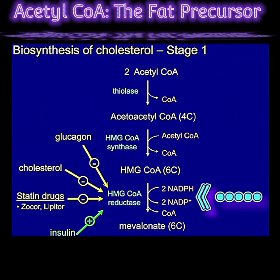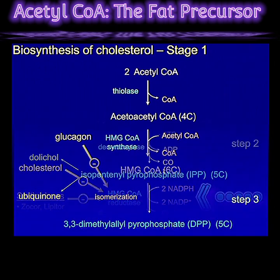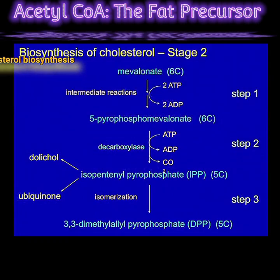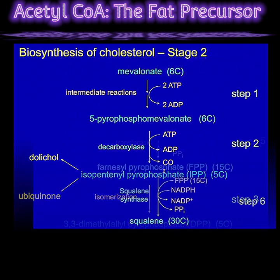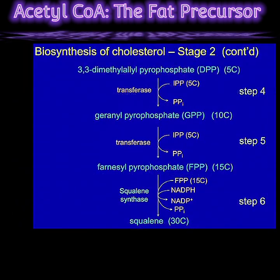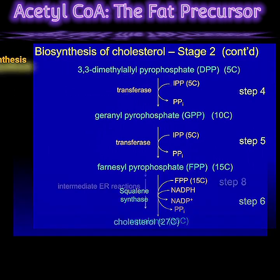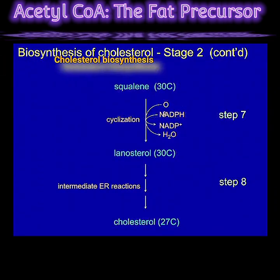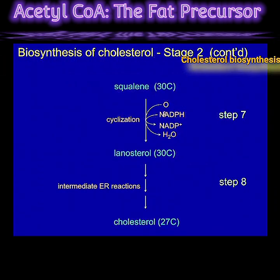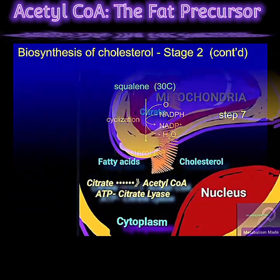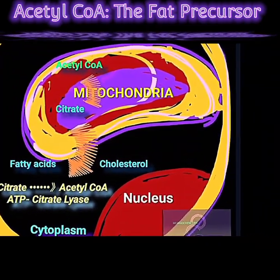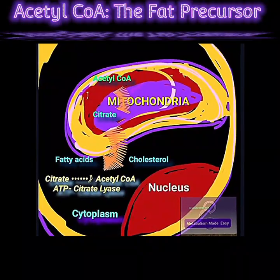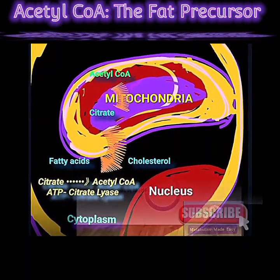HMG-CoA reductase is tightly regulated by hormones and intracellular levels of cholesterol. Isopentenyl pyrophosphate, formed from mevalonic acid, is sequentially added until squalene is formed, and then squalene is cyclized to form lanosterol and then cholesterol. The acetyl-CoA needed for cholesterol biosynthesis is produced by hydrolysis of citrate by ATP citrate lyase in the cytoplasm.